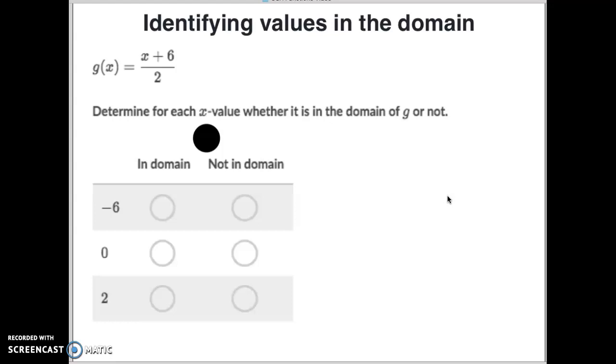So if you remember, your domain measures your X input. Domain is inputs. It's what are the possible inputs that can give you a realistic outcome.